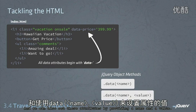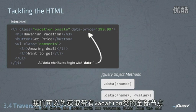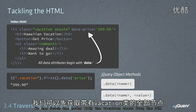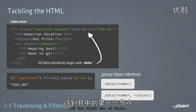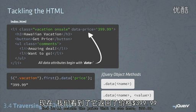Here's an example of reading out that data. You can fetch the nodes with the vacation class from the DOM, get the first one of those, then call data and specify the price name, and that would return the price that we see here — three ninety-nine ninety-nine.